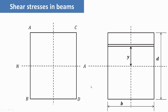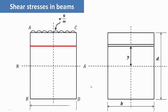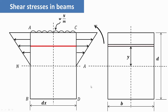Now let us derive the expression for shear stresses in a beam. As you can see, we have a uniformly distributed load of W Newton per meter. We have considered a small elementary strip with a thickness or width of dx. The shear stress distribution diagram from the neutral axis up to the outer fiber is shown, and the beam is subjected to bending moments of M and M plus dM because of the UDL, as shown in the figure.